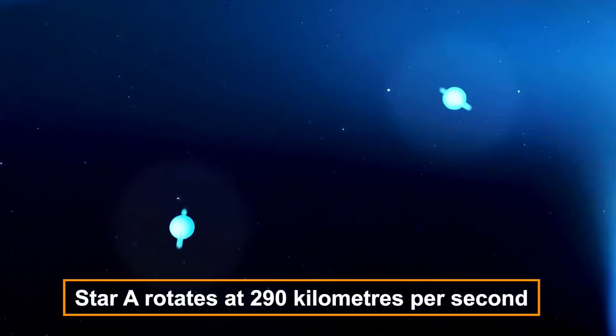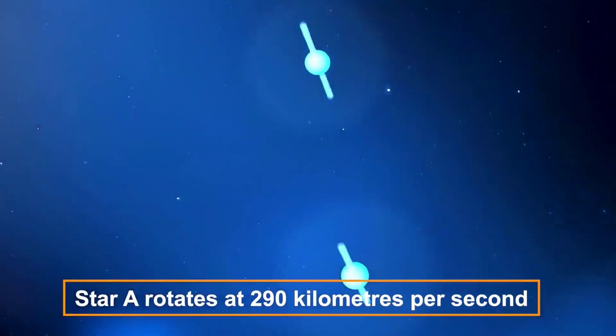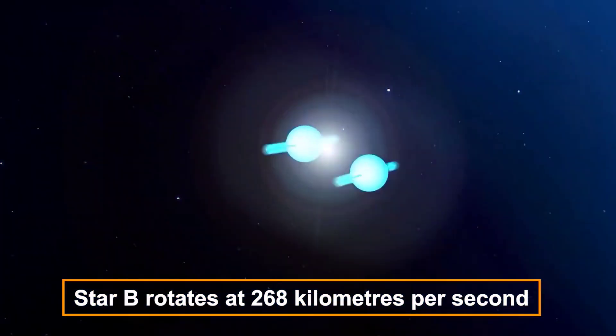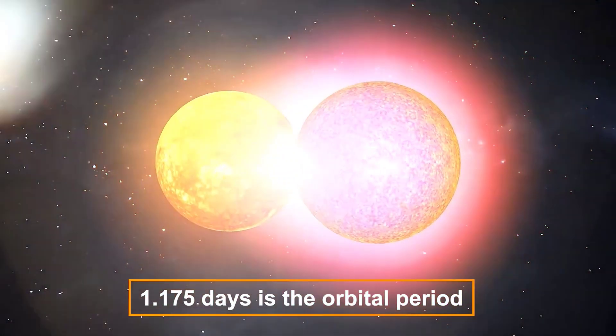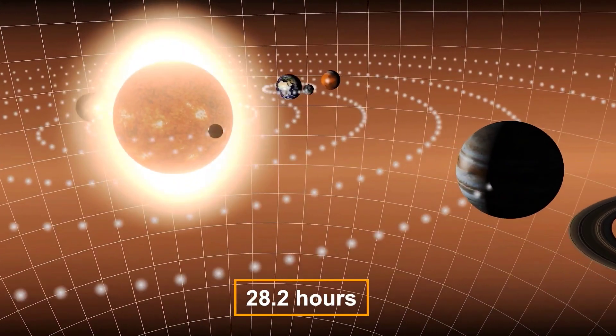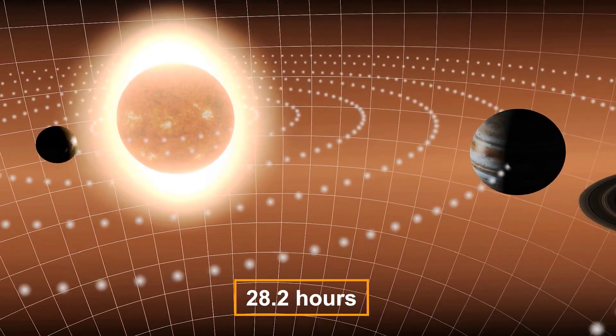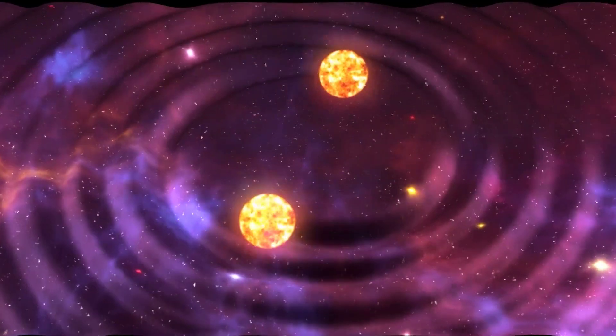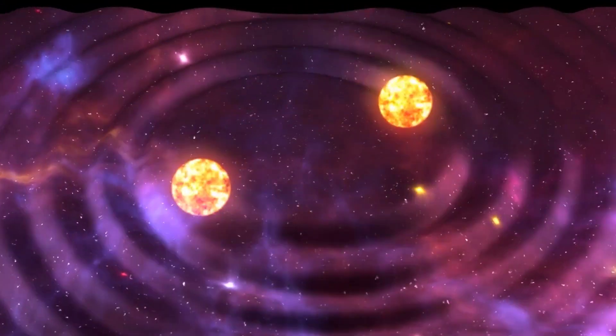Star A rotates at 290 kilometres per second, while star B rotates at 268 kilometres per second. The orbital period is 1.175 days. It takes them 28.2 hours to circle around their shared axis. As a result, they complete a full rotation around each other throughout the course of a day.